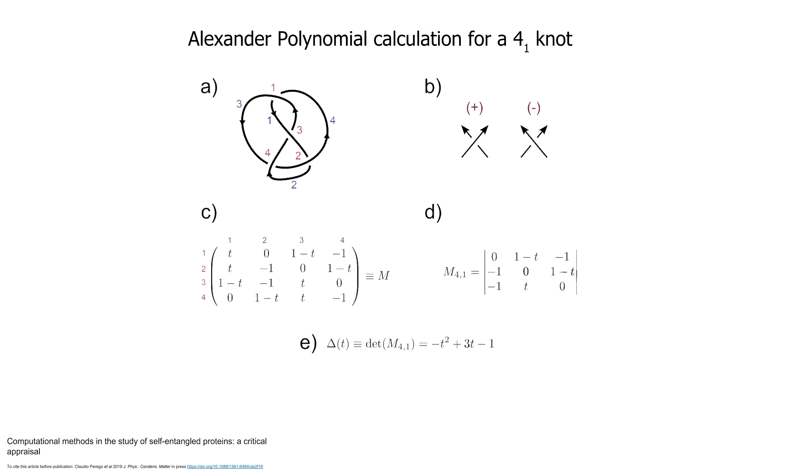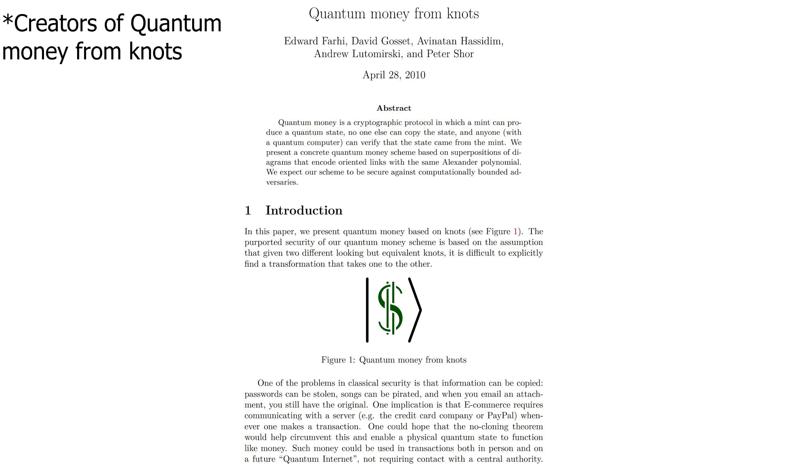Now this is where knot theory comes into play. Remember how I said there's no known way to know if two knots are the same knot? Well, that's not exactly true. They have a specific property called an Alexander polynomial, and two knots that are the same will have the same Alexander polynomial. But two of the same Alexander polynomials don't always equal the same knot. So you can actually input knot diagrams into the quantum states of the quantum money. If the money is legitimate, the merchant can verify it's legitimate without actually knowing the solution to the grid diagram, and the money is completely non-counterfeitable but can be verified by third parties.